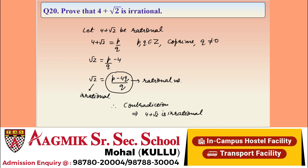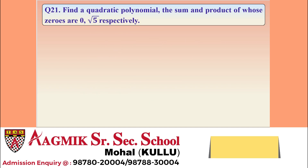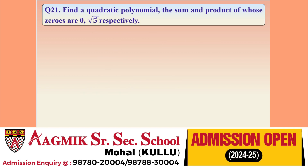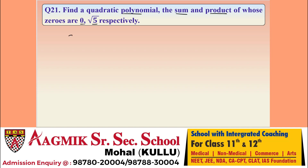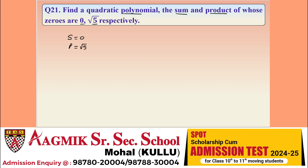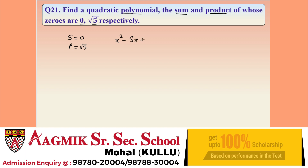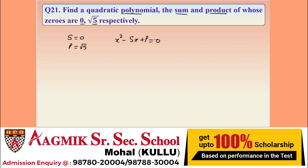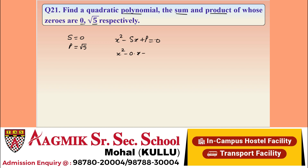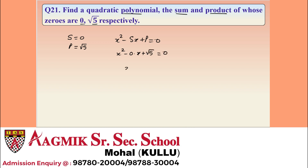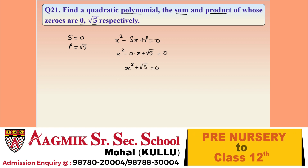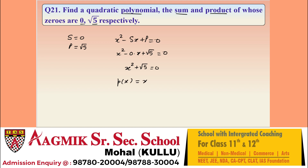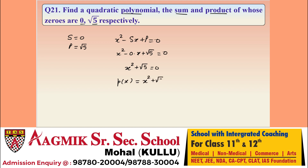Question 21: find a quadratic polynomial whose sum of zeros is 0 and product of zeros is √5. The equation is X² - (sum)X + product = 0, giving X² - 0·X + √5 = 0, so X² + √5 = 0. The required quadratic polynomial is X² + √5.